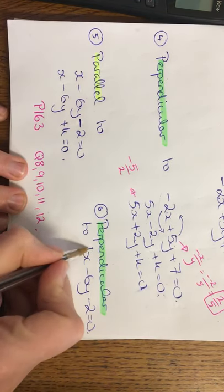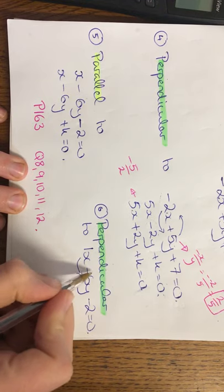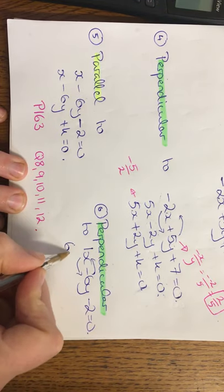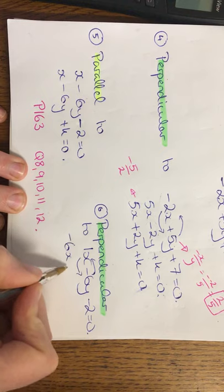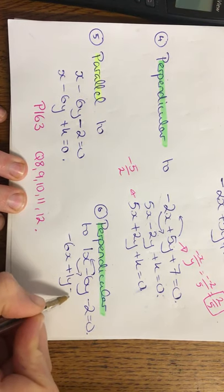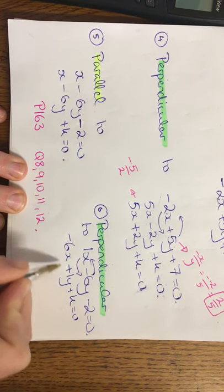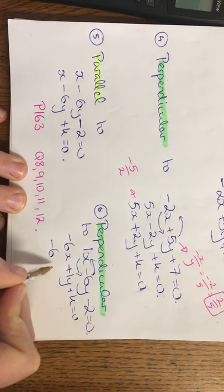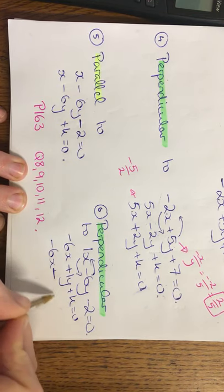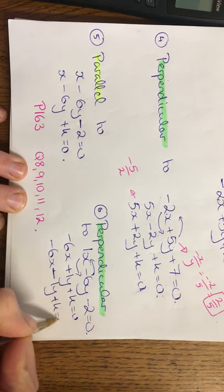Last one. Put in a 1 here with this. So we're going to swap these two first. So it's going to be minus 6x plus 1y plus k is equal to 0. And change the sign in the middle. Minus x minus 1y plus k is equal to 0.